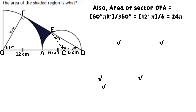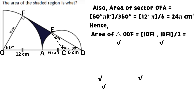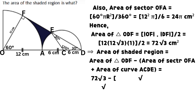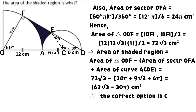Area of sector OFA equals 60 degrees times pi times R squared, all divided by 360 degrees, which equals 24 pi square centimeters. Area of triangle ODF equals half the product of line OF and line DF, which equals 72 times the square root of 3 square centimeters. It implies that the area of the shaded region equals the area of triangle ODF minus the sum of the area of sector OFA and the area of curve ACDE, which equals 63 times the square root of 3 minus 30 pi square centimeters.